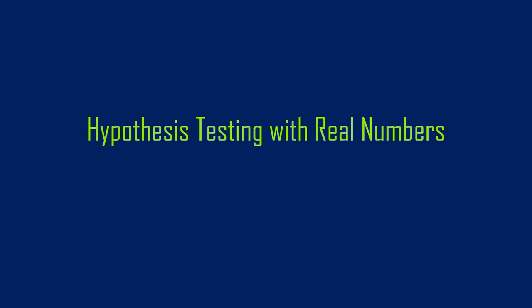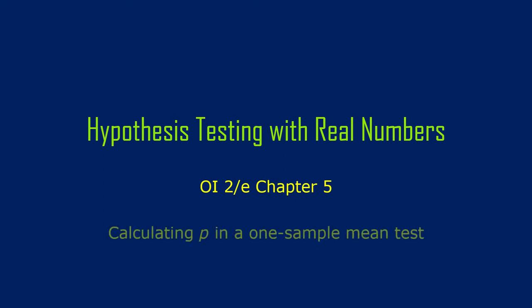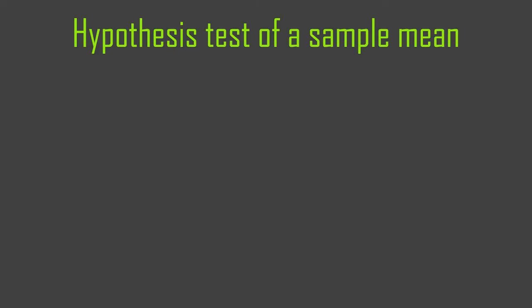More on hypothesis testing — the real numbers are still not coming fast and furious, this is just preparation. Let's talk about how we calculate P in a hypothesis test. The simplest case of a numerical hypothesis test is a one-sample mean test, where we have one sample mean and we're trying to compare it against a null hypothesis population mean, to determine if it's plausible that our sample came from that null hypothesis situation.